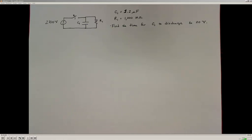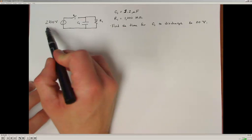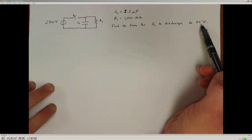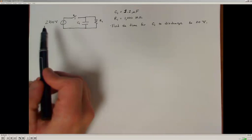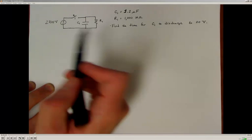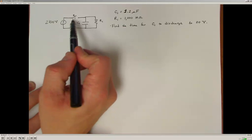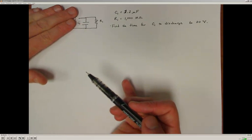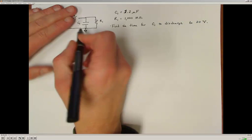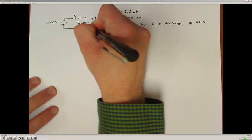In this example, we're going to look at a capacitor connected to a resistor that was once charged to 2,100 volts. We're looking for the time it's going to take this capacitor to discharge through this resistor until the voltage across the capacitor reaches 20 volts. So it's going to start at 2,100 volts of potential and decrease down to 20 volts. This is a free response case where we are removing the input power supply from this circuit.